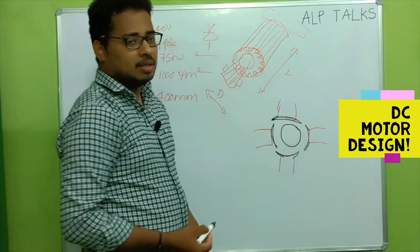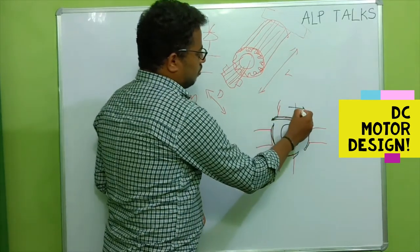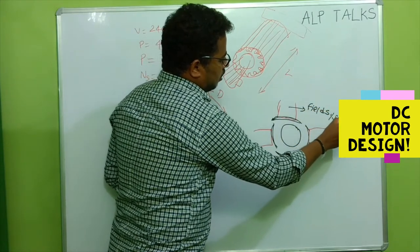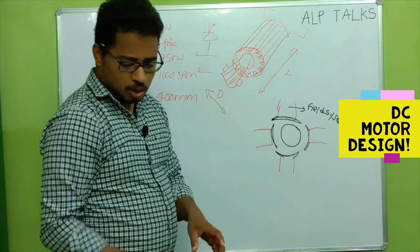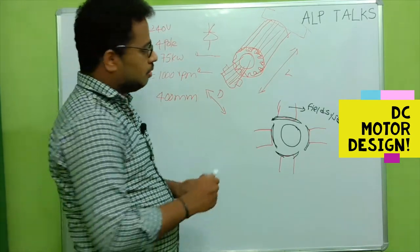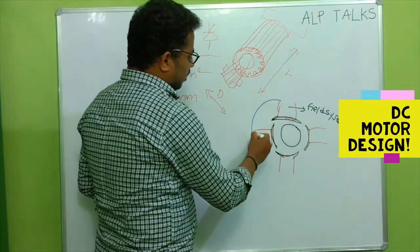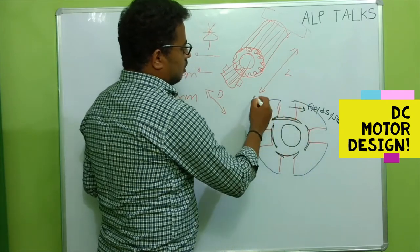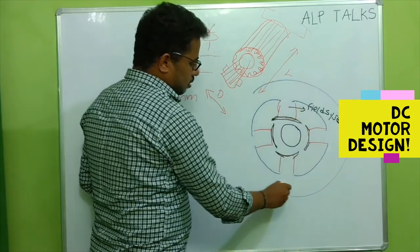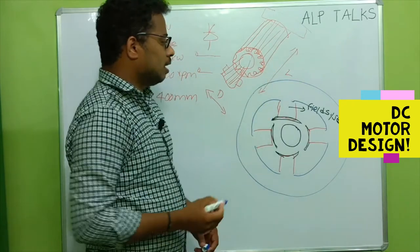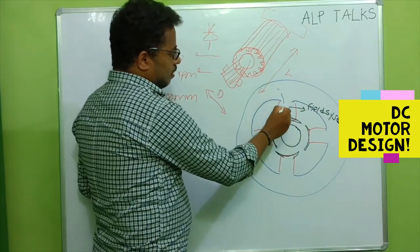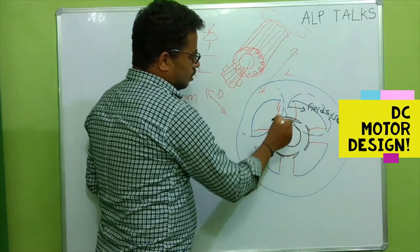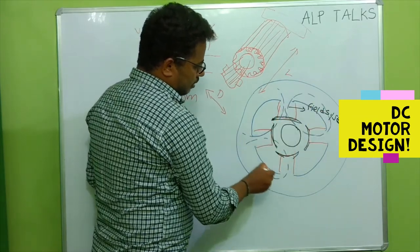This is the field system we can say. You have yoke or yoke arrangement also for housing all these poles. Yoke will be like this - whatever I am drawing in blue color. The flux flow will be like this, forming the closed loop through this pattern.